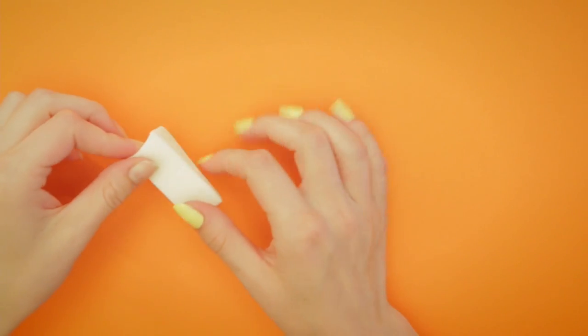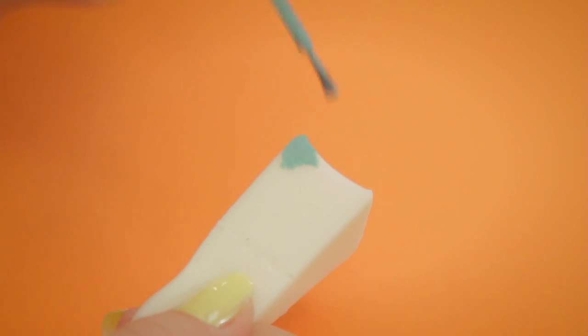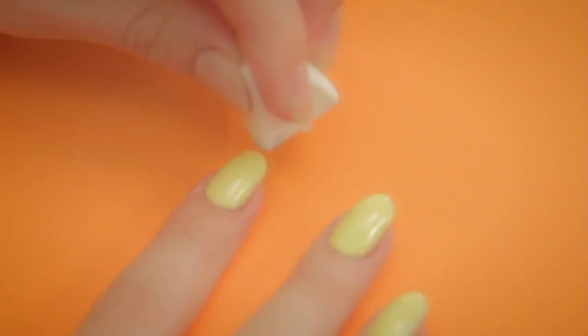After drying for a few minutes, take your sponge, apply the blue color on the corner, then lightly dab the blue on the tip of your nail.